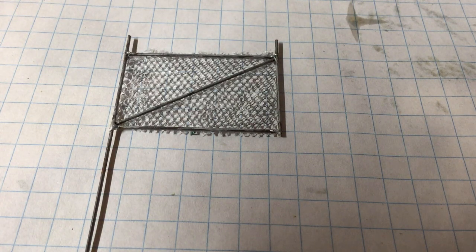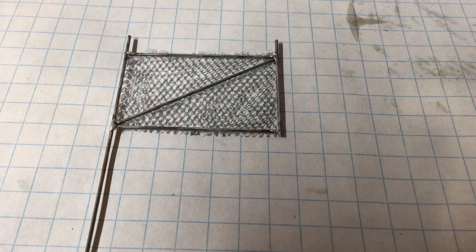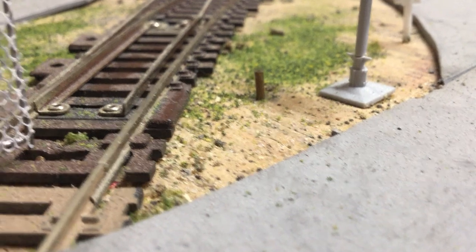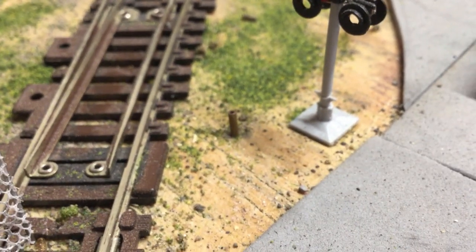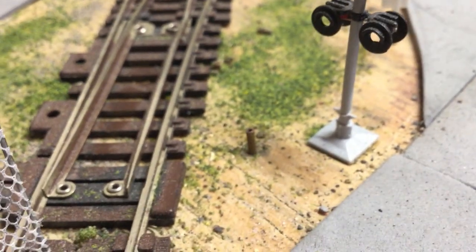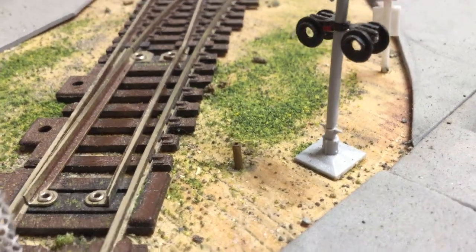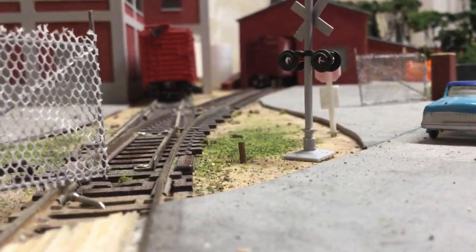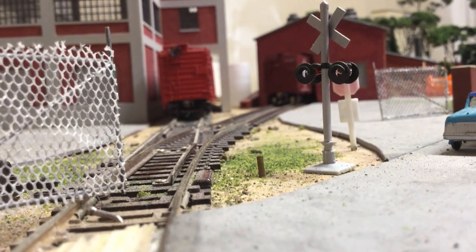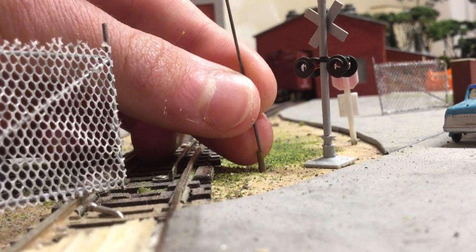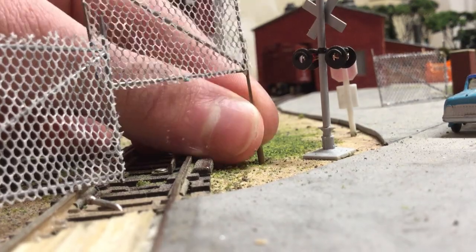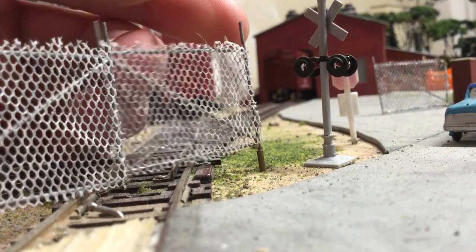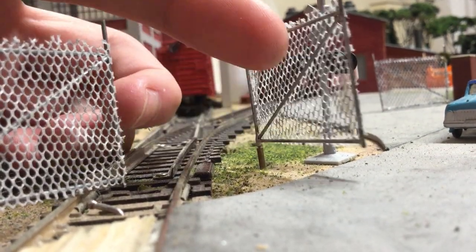Now I'm going to head over to the layout and I'll show you how I make these spin freely. So here you can see I've installed my brass tubing inside my plywood benchwork, and that is so the gate can open freely. So I'll set this down, and installing the gate is as simple as sticking the wire into the tubing, and you have your operating gate.